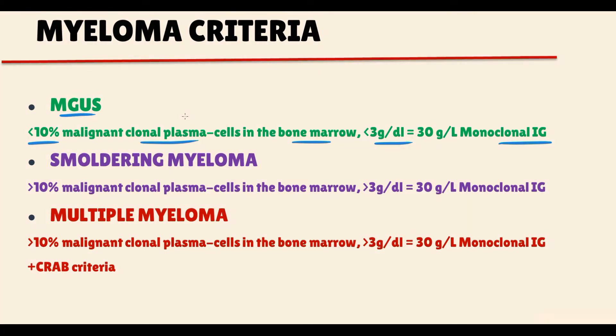If the amount of malignant clonal plasma cells in the bone marrow increases and becomes greater than 10% of all cells in the bone marrow, this causes increased production of monoclonal immunoglobulin, and when the amount of monoclonal immunoglobulin in the blood becomes greater than 3 g per deciliter, this condition is called smoldering multiple myeloma.